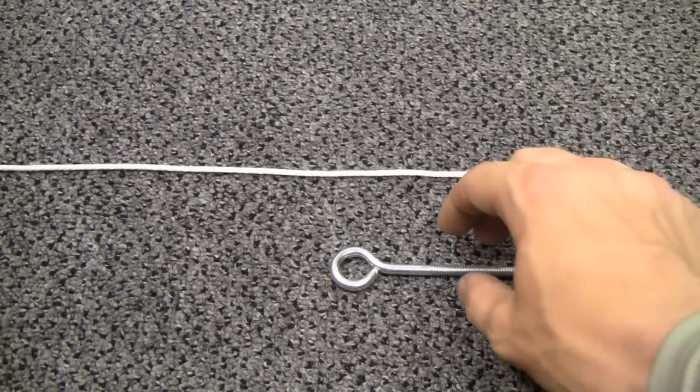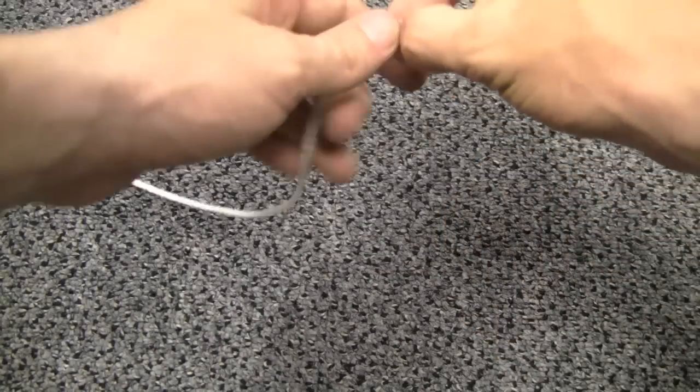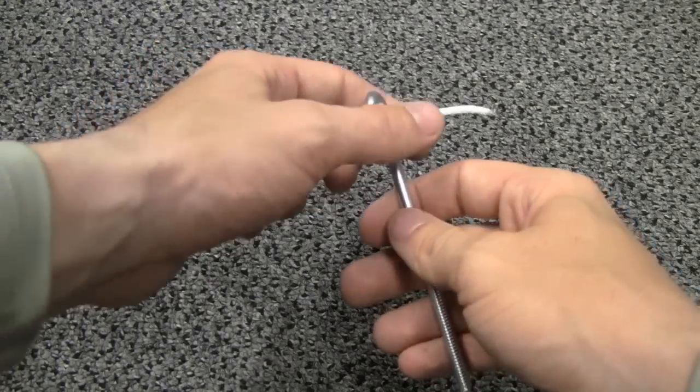We're going to begin our improved clinch knot by simply taking the end of our leader and passing that through the eye of our hook.